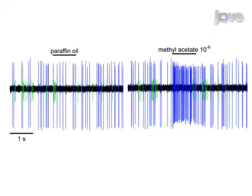This figure shows recordings made from two Drosophila AB2 sensillum cells. Recordings from the A cell are shown in blue, and recordings from the B cell are shown in green. While neither cell is activated during application of paraffin oil, as shown in the figure on the left, only the A cell responds to methyl acetate.